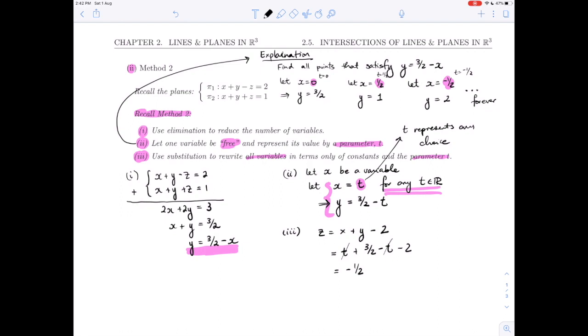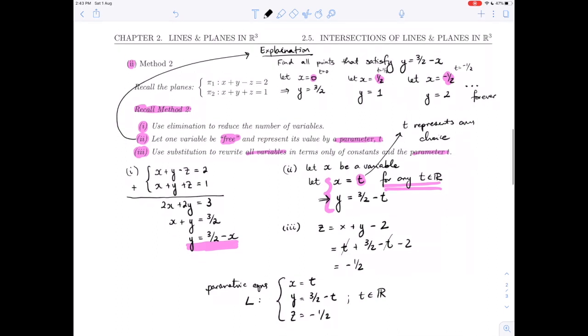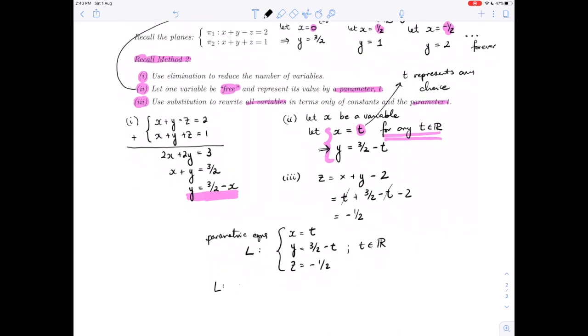A solution writes down the answer for all variables: x, y, and z. In terms of t, we have x is t, y is 3/2 - t, and z is -1/2 for any value of t in R. Take a look at that for a second. That looks like something we've seen before. It looks exactly like the parametric equations for a line, for our line of intersection L.